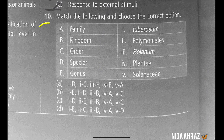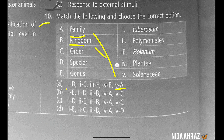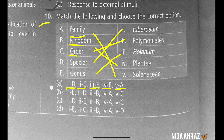Match the following and choose the correct option. Family matches with Solanaceae (A - fifth); Kingdom matches with Plantae (B - fourth); Order matches with Polymoniales (C - second); Species matches with tuberosum (one); and Genus matches with Solanum. Option A is the correct choice.